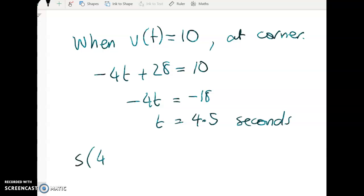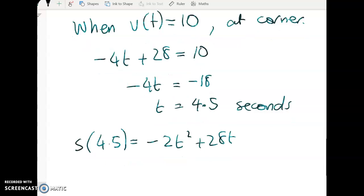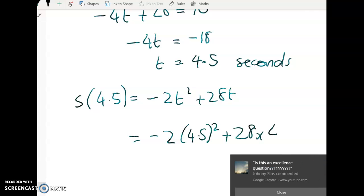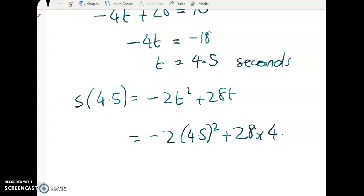So S at 4.5 is equal to negative 2. Remember, my displacement function is negative 2T squared plus 28T. So we just have to substitute 4.5 in there.